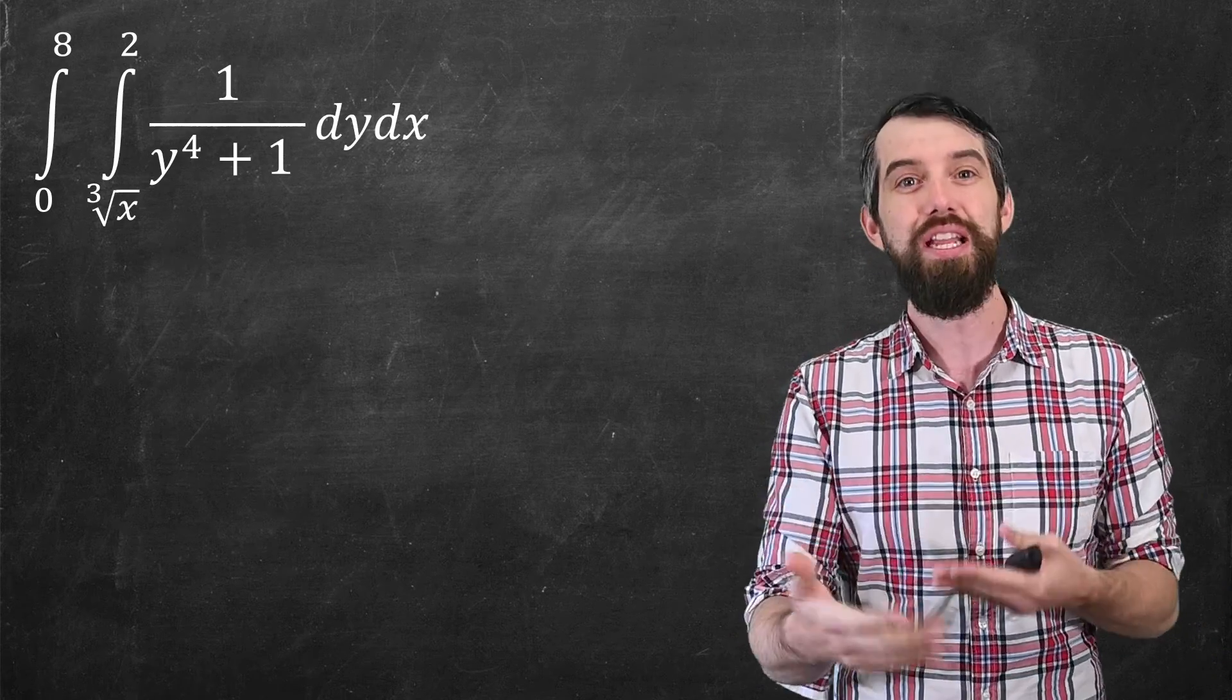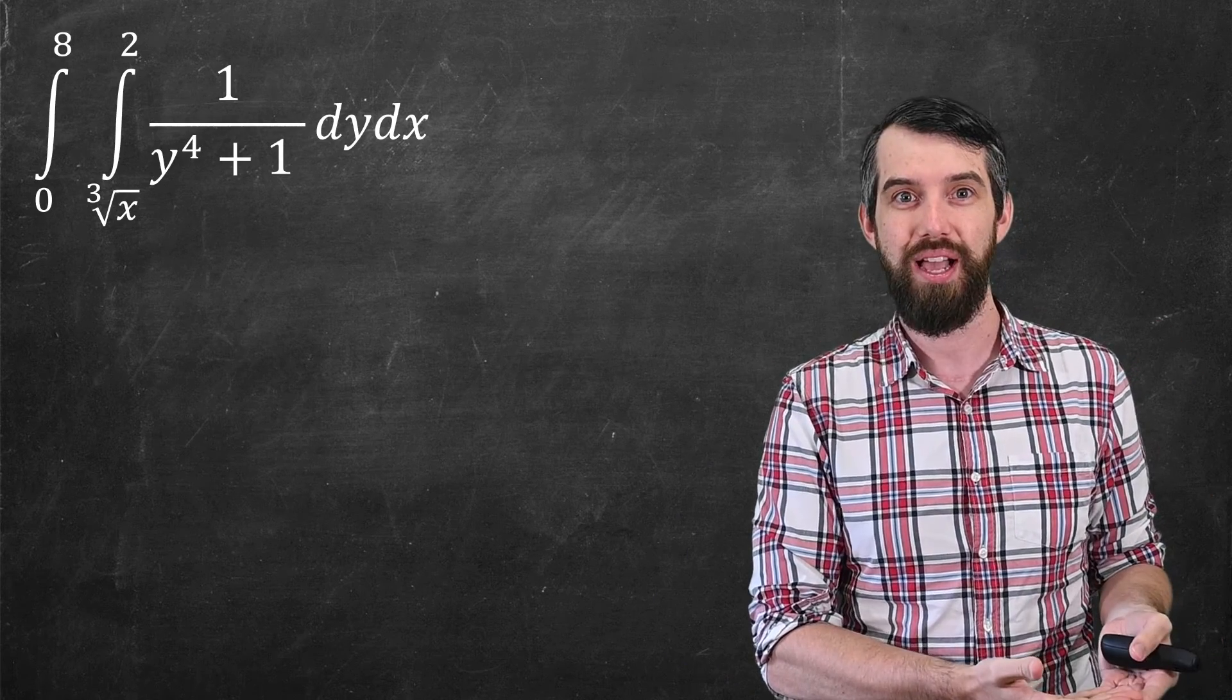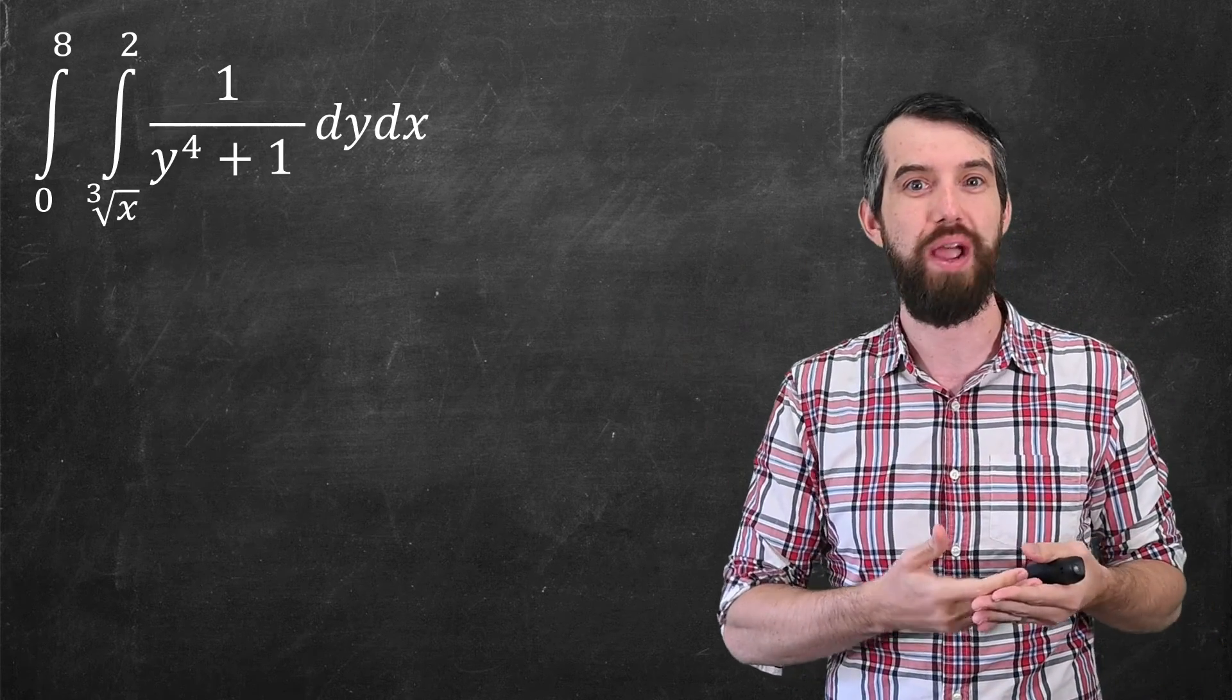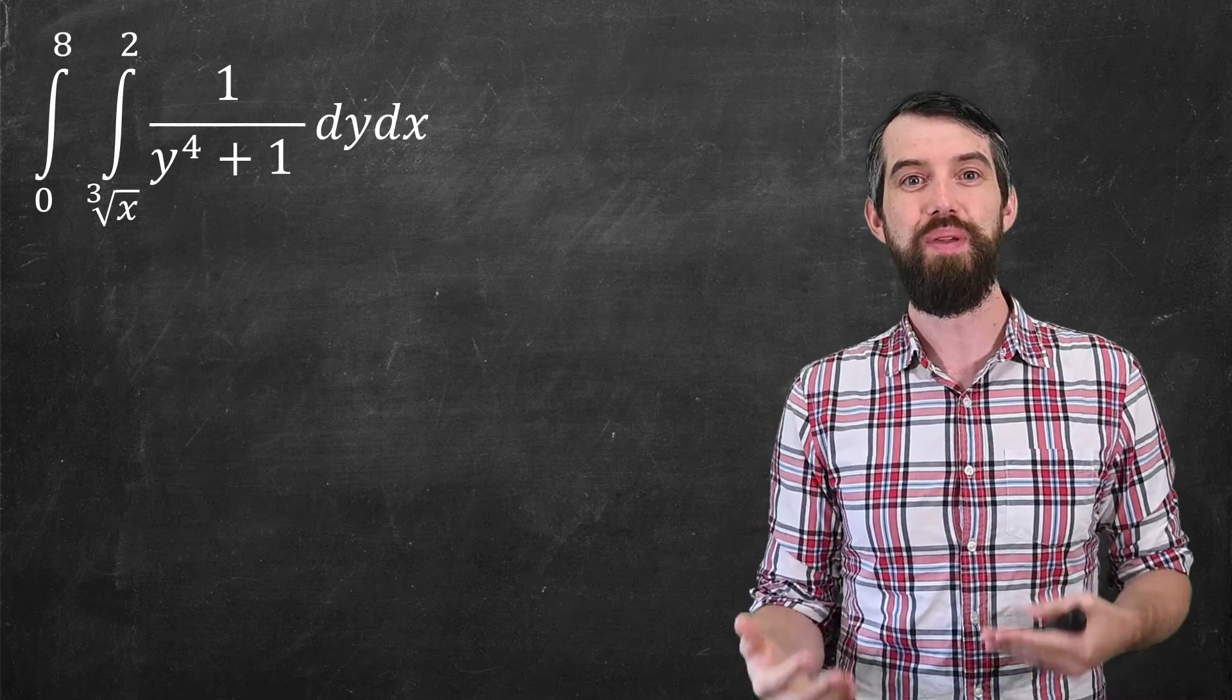So in order to change the order of integration, to do an integral with respect to x first and then do an integral with respect to y, I'm going to have to correspondingly change all the limits of integration, which are right now written as cube root of x up to 2 and 0 up to 8. So my process is going to be this.